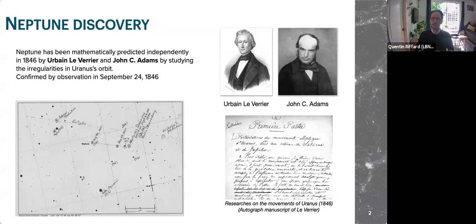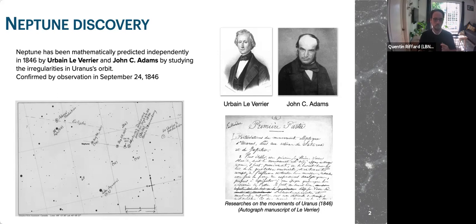The Neptune position was mathematically predicted independently in 1846 by Urban Le Verrier and John Adams by studying the irregular orbits of Uranus. Here you can see pictures of the old style of doing physics. What is really interesting is that first we had this theoretical prediction of the position of Neptune, and then it was confirmed the same year, a bit later, by observation.